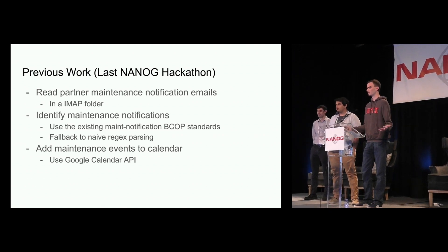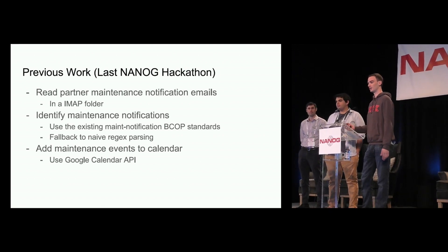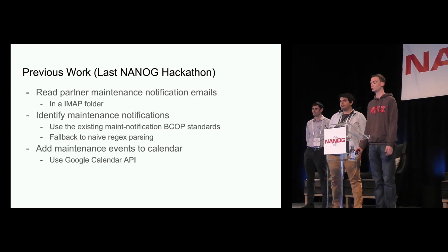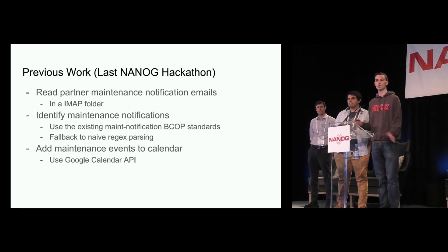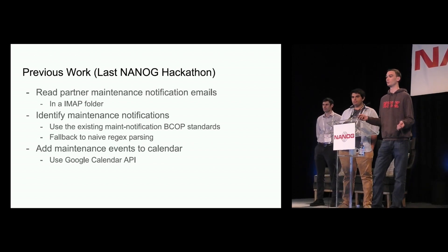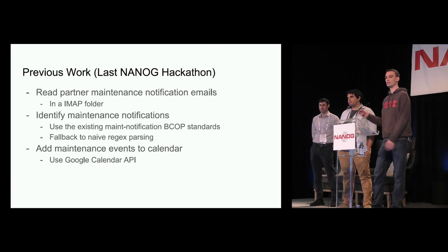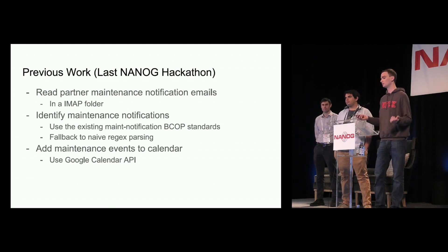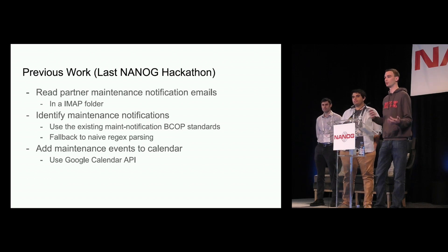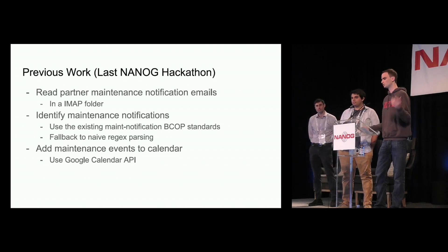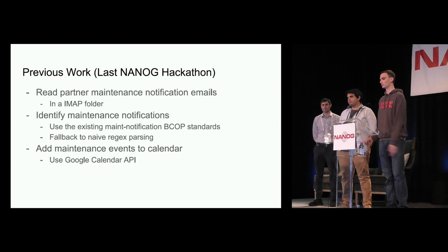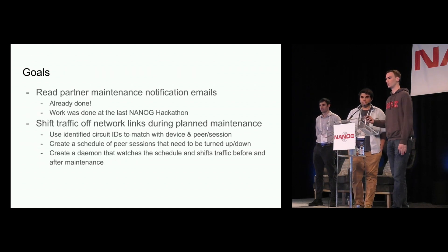At the previous NANOG hackathon we worked on a project that allowed us to read partner maintenance notification emails. It was very simple — we just read emails from an IMAP folder and tried to identify which of those emails are maintenance notifications. There's an existing maintenance notification BCOP standard that has some headers in an ICS attachment that we can use to identify maintenance notifications, so we looked for those first. If we couldn't find it, we fell back to some naive regex parsing — simple regex strings that pull out start time, end time, circuit ID, and other small details about the maintenance event. Once we had all these events, we bundled them together and put them in a schedule as well as Google Calendar.